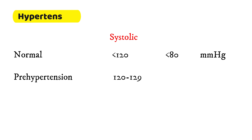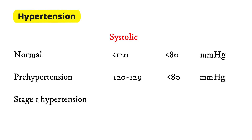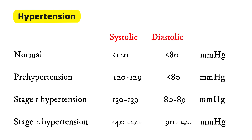In this video we will discuss hypertension in detail. Here you can see the values of blood pressure in a normal person, in case of pre-hypertension, in case of stage 1 hypertension, and in stage 2 hypertension.